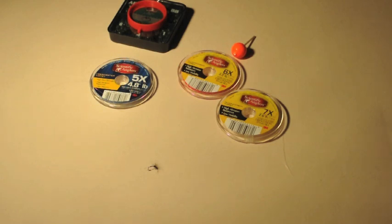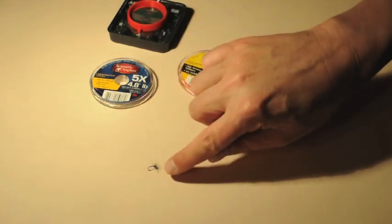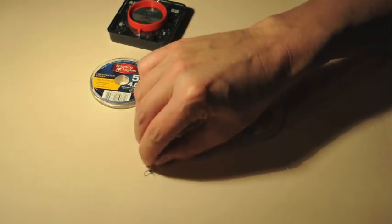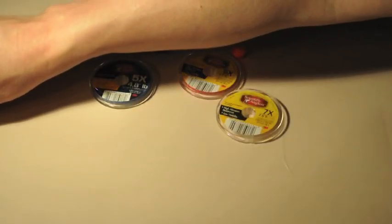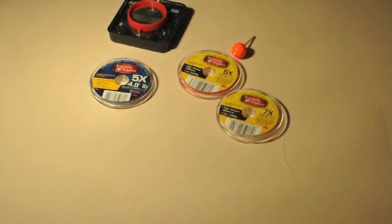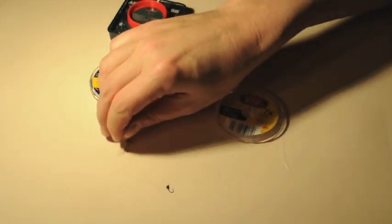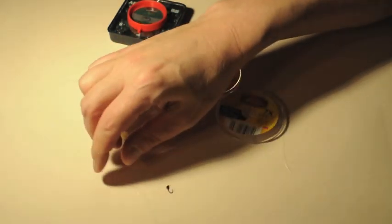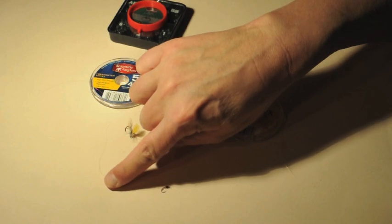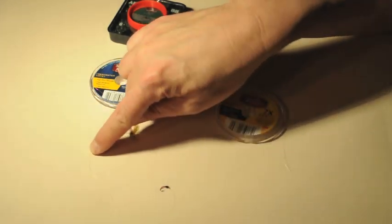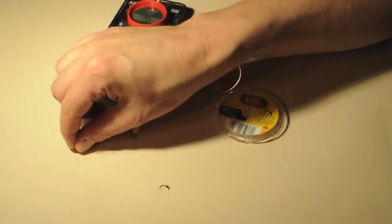Maybe you're having trouble seeing that fly, or especially with a nymph. Sometimes with a midge larva or pupa like this one, I'll put floating up to within just a few inches of the fly and then watch my leader. When my leader twitches, I set the hook.